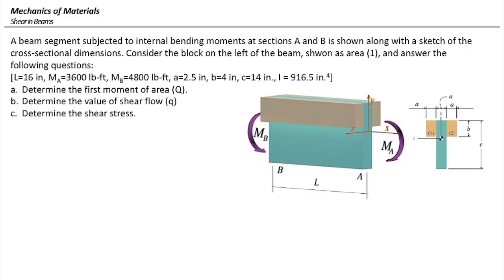The first problem involves a T-shaped element which consists of two blocks on the side and one block at the middle part. If we consider area number one, which is a segment on the left side, we want to know the first moment of area, the value of shear flow, and the shear stress.